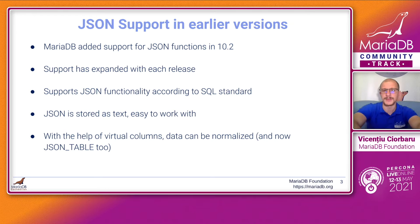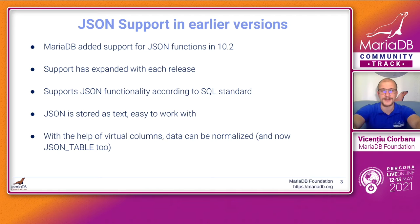Additionally, MariaDB has a feature called virtual columns that you can use to index data according to a particular expression. In this case, you can use virtual columns to index particular fields in JSON, which means you can have your cake — holding JSON in MariaDB — and also eat it with fast lookups inside JSON documents.